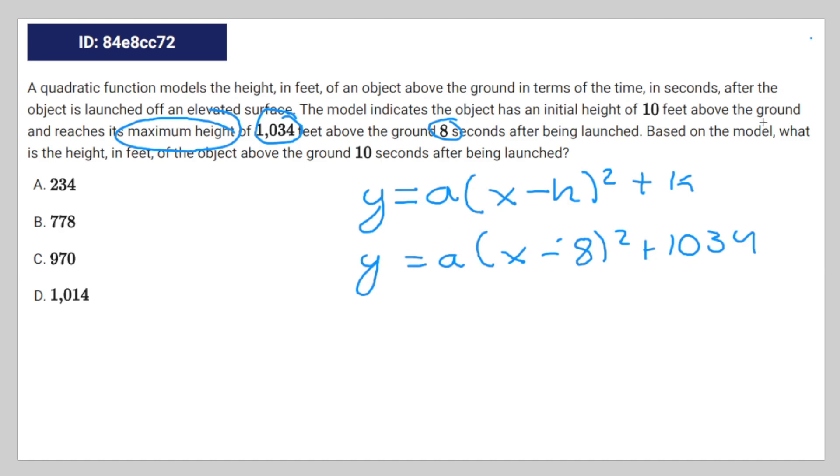To find a, we use the other coordinates we're given, 0 and 10. So that's going to be 10 equals a times 8 to the power of 2, which is 64, plus 1,034.